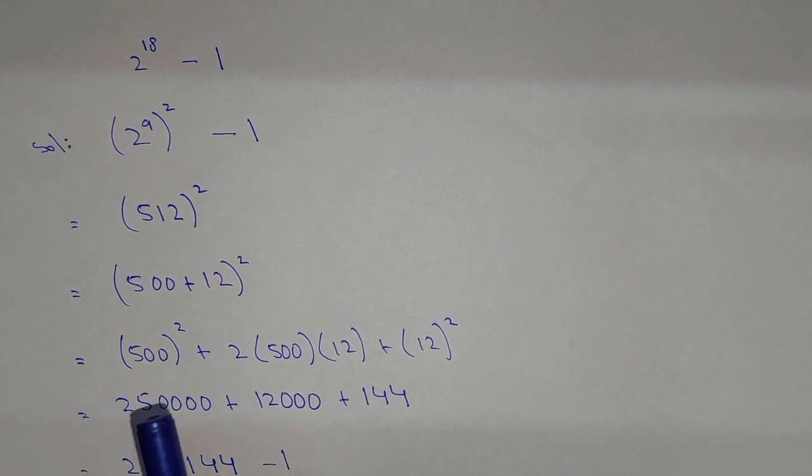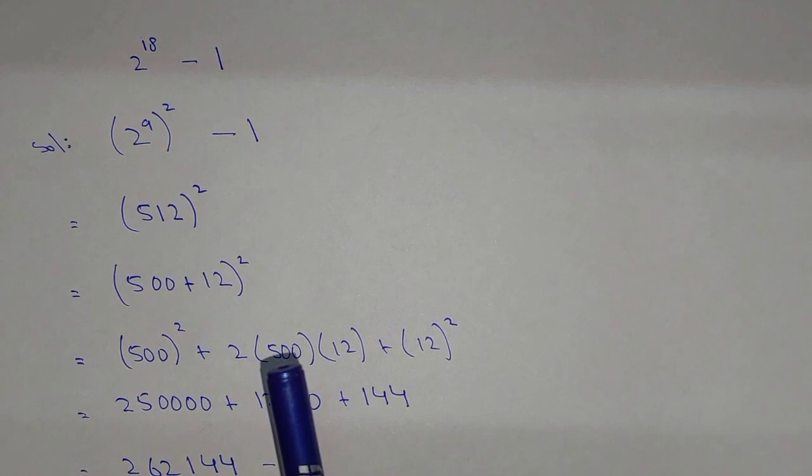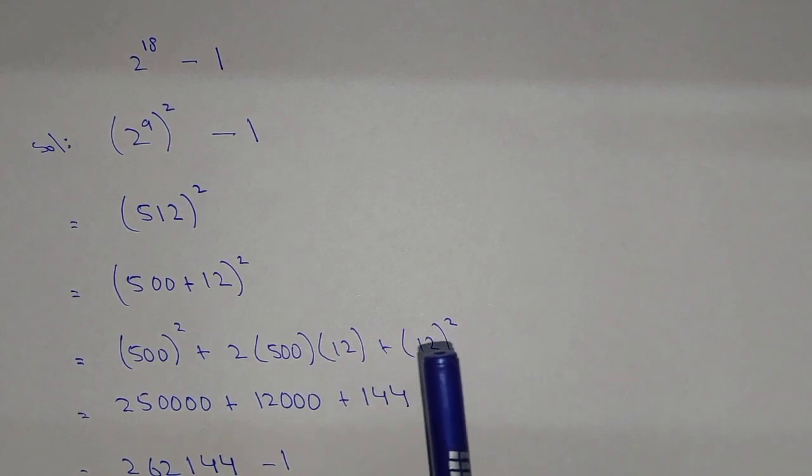So it is 250,000 plus 2 × 500 = 1,000, times 12 = 12,000, and we know that 12^2 = 144.